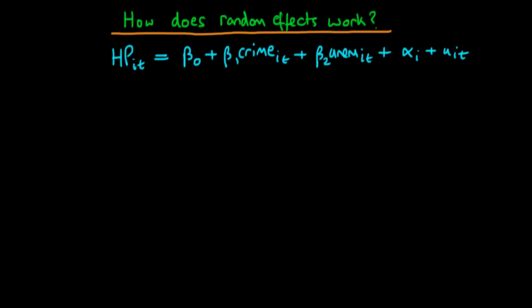In this video I want to talk about what random effects estimation actually is and how it works. We're going to use the same example from the last few videos: investigating the various factors which influence house price in a given city i at time period t. That might depend on the crime rate and unemployment rate, and as well as these factors there are also some unobserved factors contained within alpha_i — specific to that city but not varying across time — and idiosyncratic factors within the u_it term.